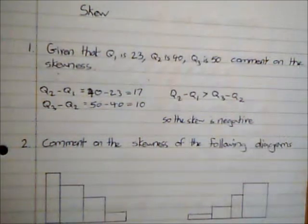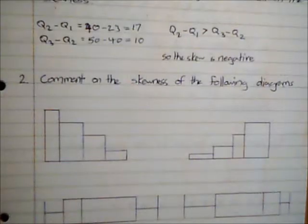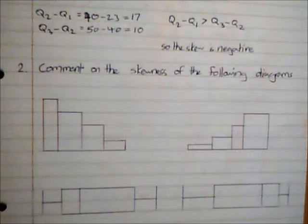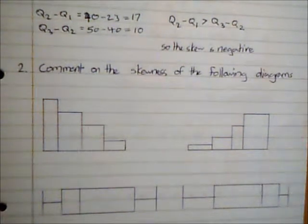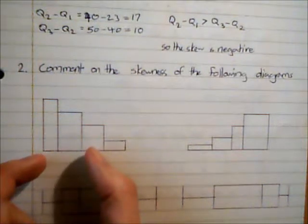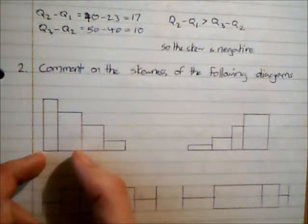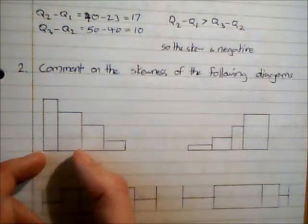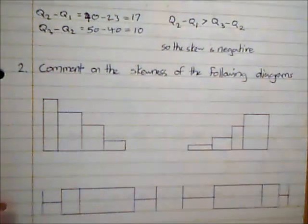And we can also use the shapes of graphs to tell us something about skew. So if we consider, first of all we've got here outlines of two histograms. So what does this tell us about skew? Well we can see in this first one that the data is all bunched up at the first end and we would describe this as having positive skew.